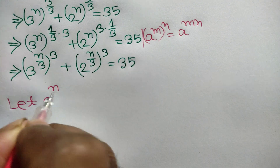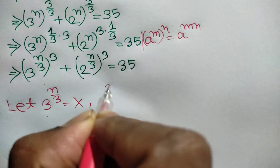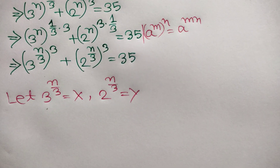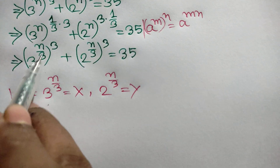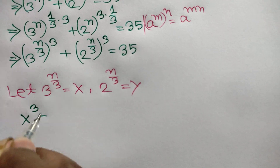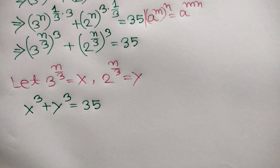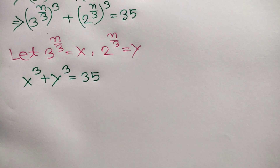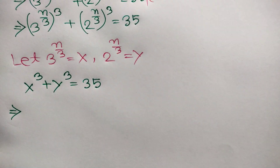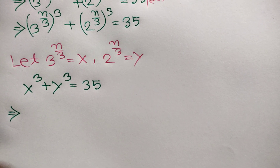Now let 3 to the power n over 3 be equal to x and 2 to the power n over 3 be equal to y. So we can write x cubed plus y cubed is equal to 35.